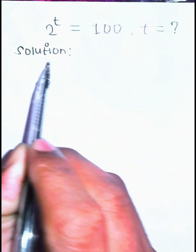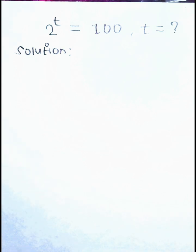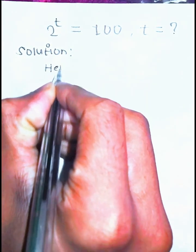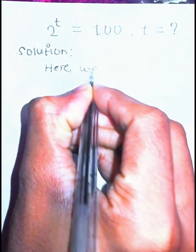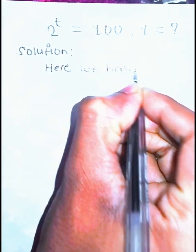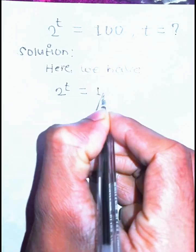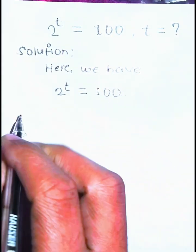Welcome back guys. Today we are going to solve a hard exponential equation. The equation is 2^t = 100, find the value of t. First, for the solution, we have to write the given equation.